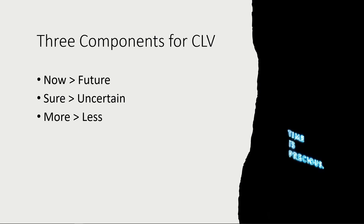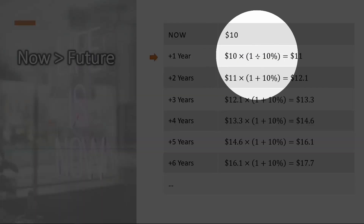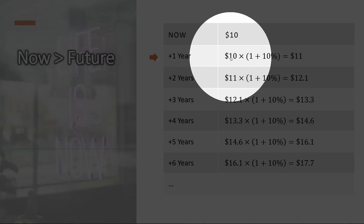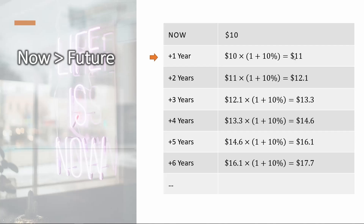Let me elaborate on the first component: now is better than the future. Assume the interest rate — earned by purchasing a U.S. government bond — is 10% per year. If you have $10 now and earn a 10% interest rate, a year later you have $10 times (1 + 10%), which is $11. This is how compound interest works, and your $10 grows over time.